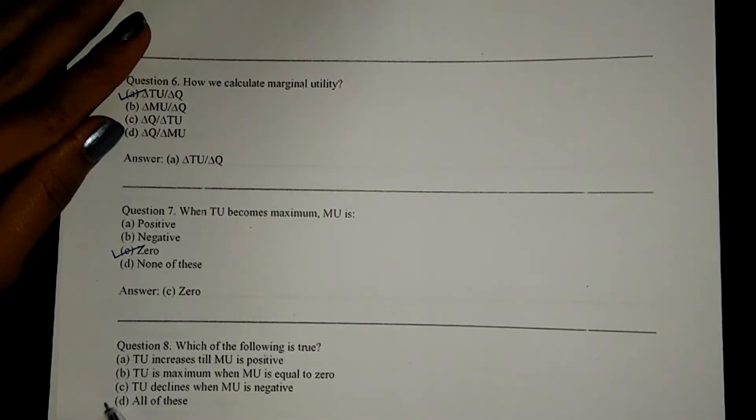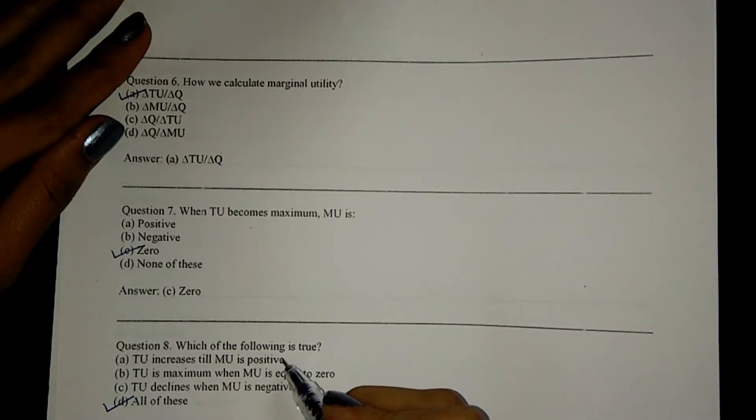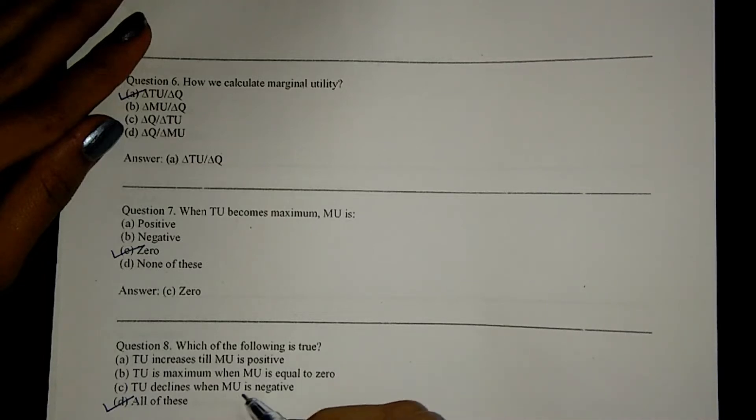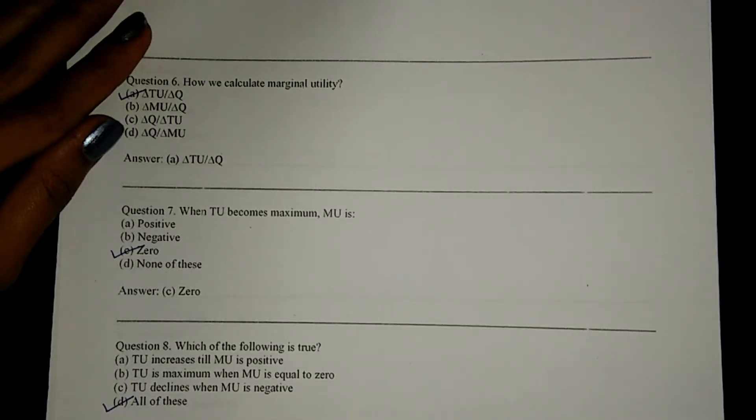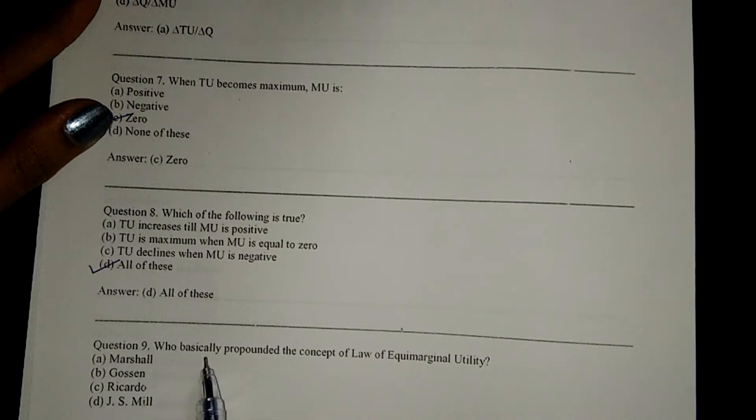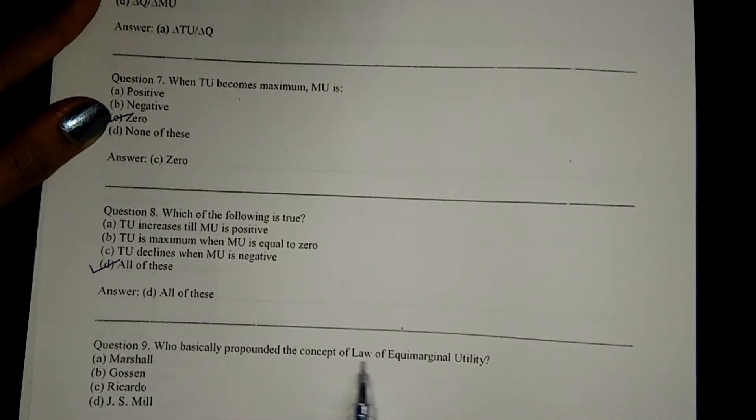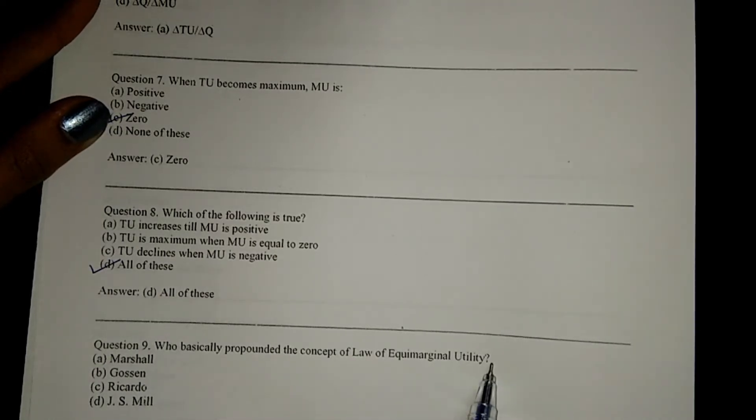Next, which of the following is true? D, all of these: TU increases till MU is positive, TU is maximum when MU equals zero, and TU declines when MU is negative. Who basically promoted the concept of law of equi-marginal utility? That is Ricardo.